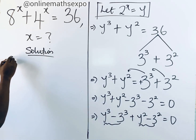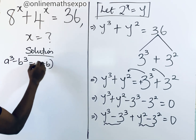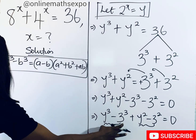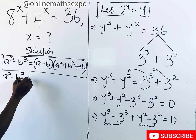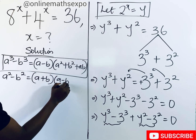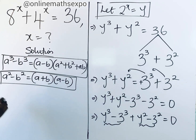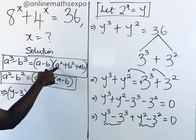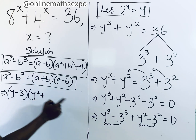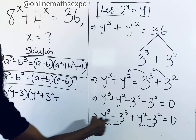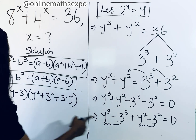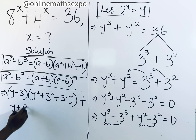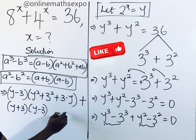We solve these two groups separately. For the first group, recall that a cubed minus b cubed equals (a minus b)(a squared plus b squared plus ab). For the second group, recall that a squared minus b squared equals (a plus b)(a minus b). Applying these, the first group gives (y minus 3)(y squared plus 3 squared plus 3y), and the second group gives (y plus 3)(y minus 3), with everything equal to 0.